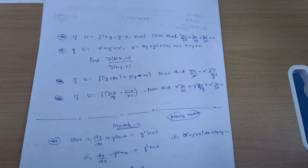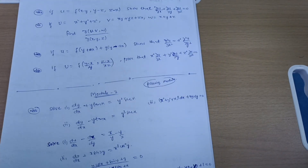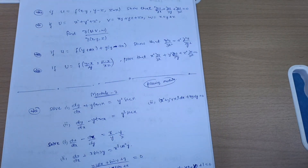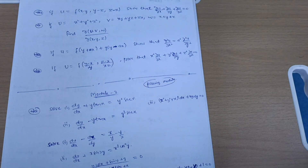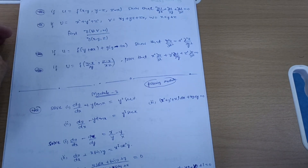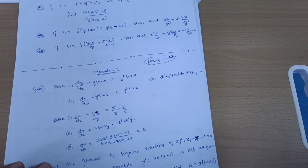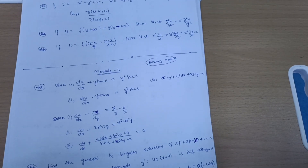Next we have module three, which is again a passing module. In module two, I covered only two topics: Jacobians and Maclaurin's series. Now in module three, you should go through these varieties of differential equations.